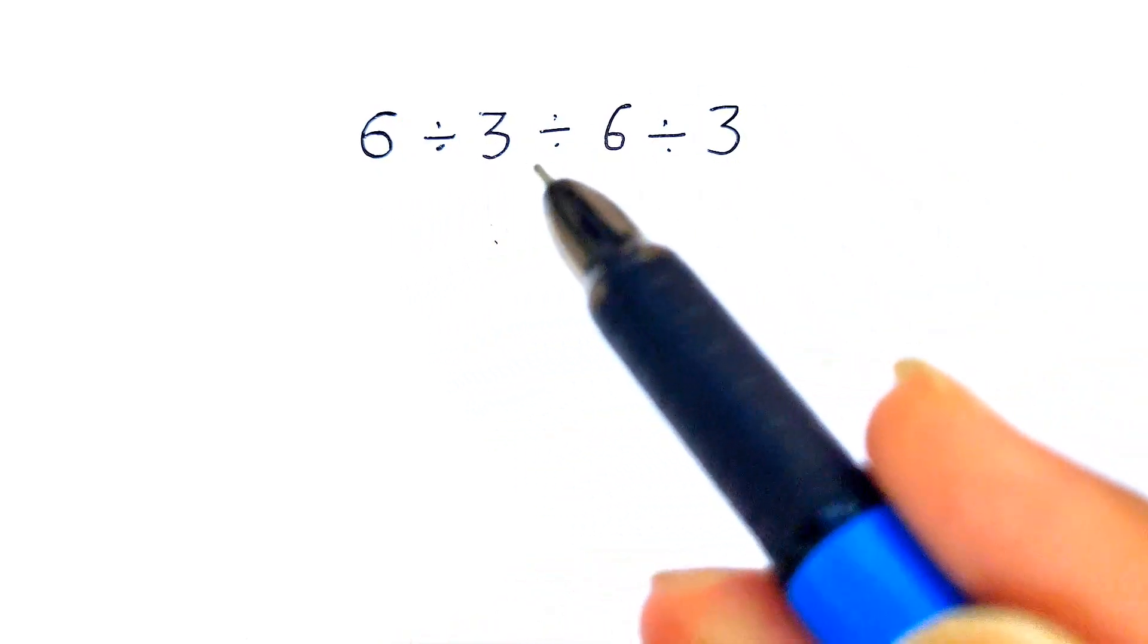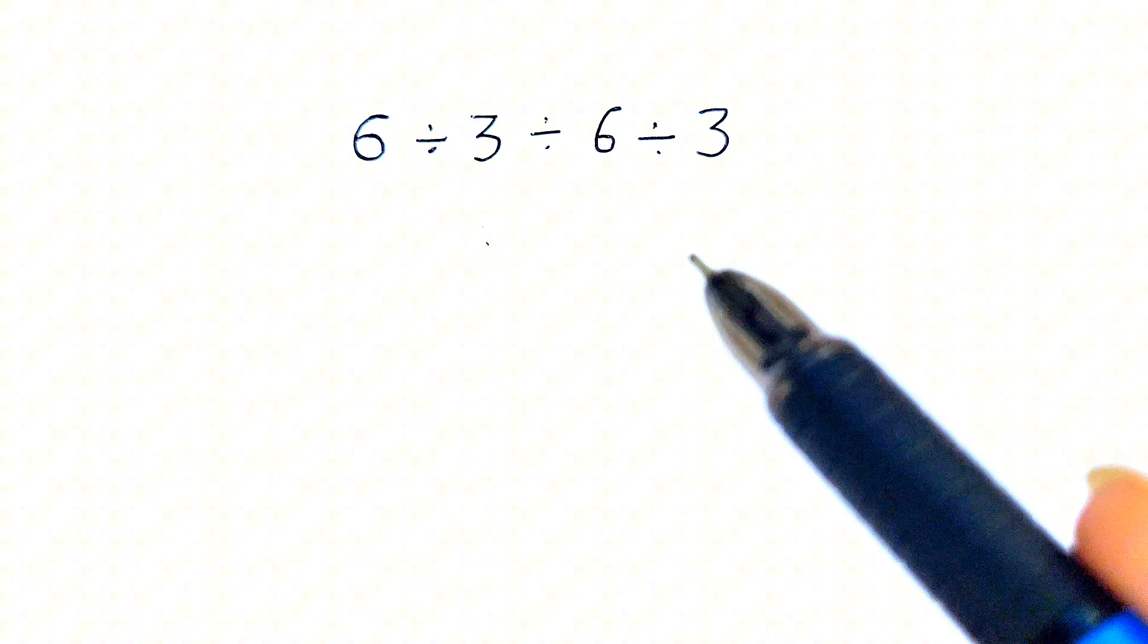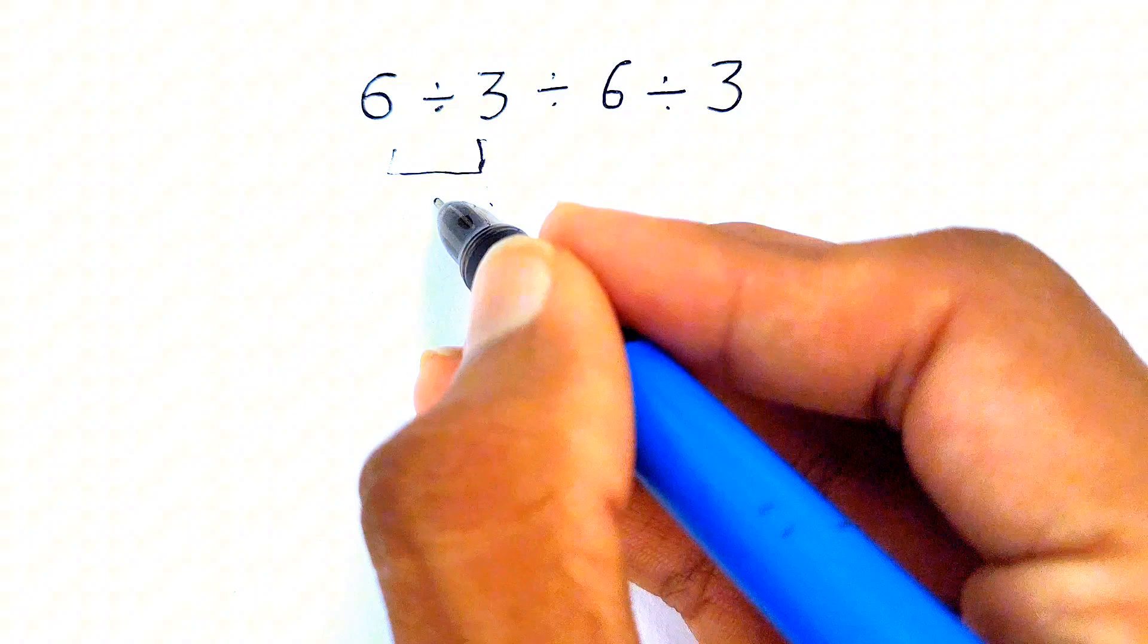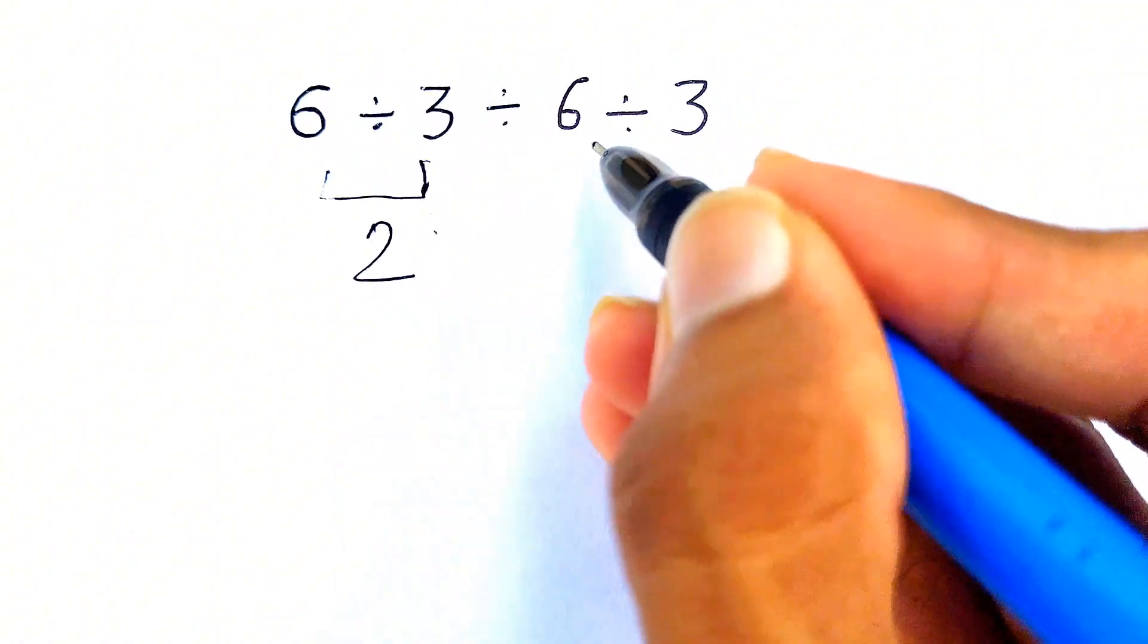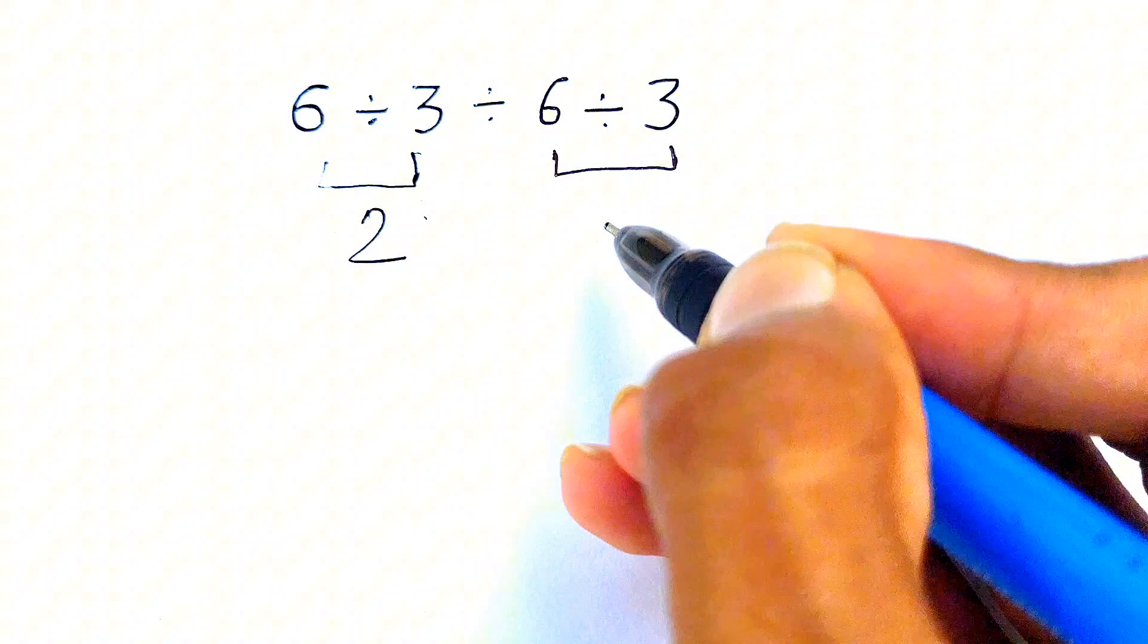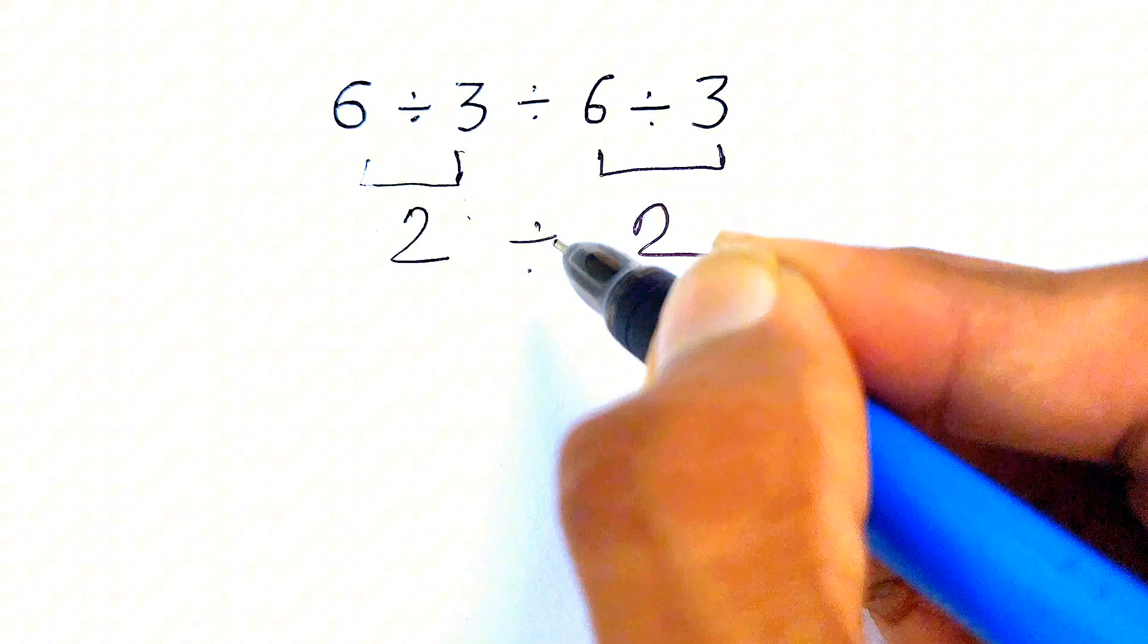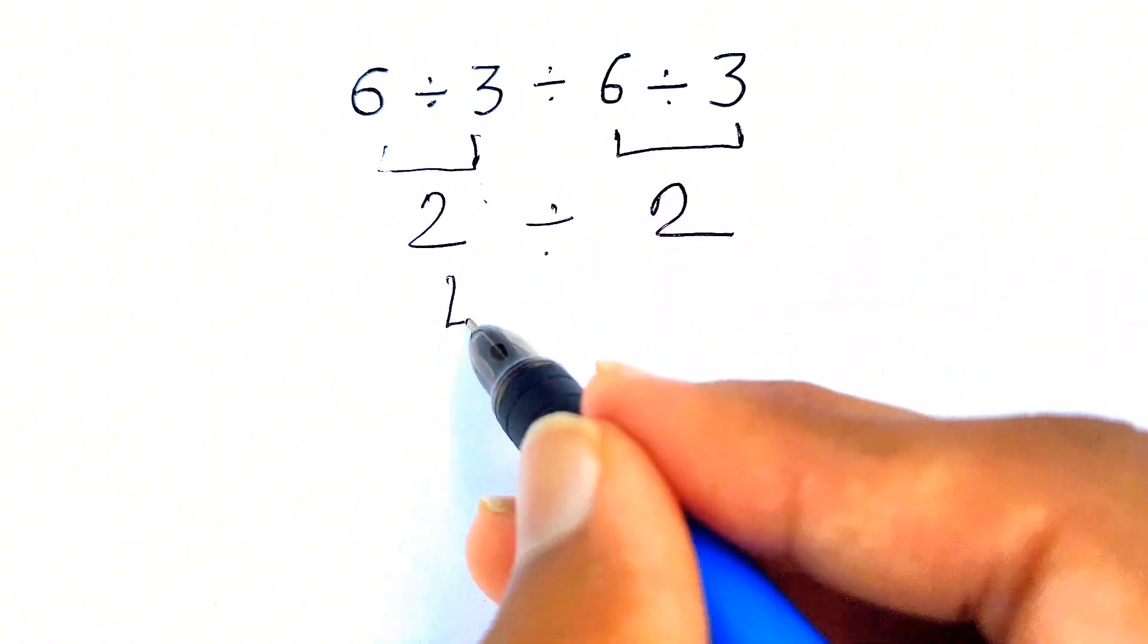Welcome back guys, we have the expression 6 divided by 3 divided by 6 divided by 3. Most people solve this like 6 divided by 3 gives us 2, and then this 6 divided by 3 also gives us 2. Now we are left with this division sign, so we have the expression 2 divided by 2 that simply gives us 1.